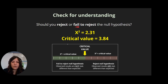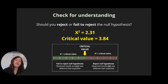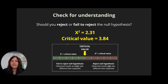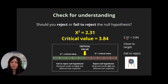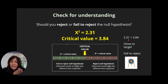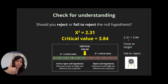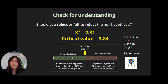Should we reject or fail to reject the null hypothesis? Our chi-squared is 2.31 and our critical value is 3.84. Since 2.31 is less than 3.84, we're less than the critical value, which means we're closer to the target. That means we're pretty close to the null hypothesis, so we fail to reject. In other words, those results are not statistically significantly different.